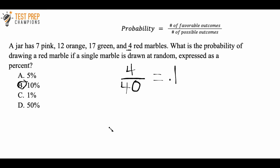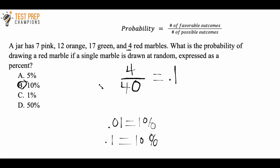Let me just clear something up here. So 0.01 is equal to 1%, and 0.1 is equal to 10%. So if you thought that answer choice C was the right answer, you were on the right track — especially if you did 4 divided by 40 — but just keep in mind that 0.1 is equal to 10% and 0.01 is equal to 1%. So B is the correct answer here.